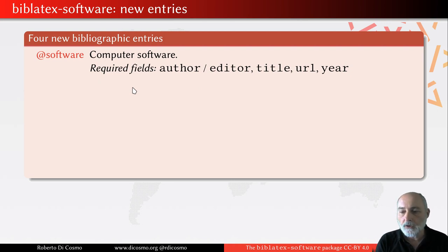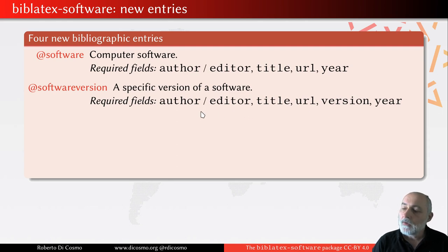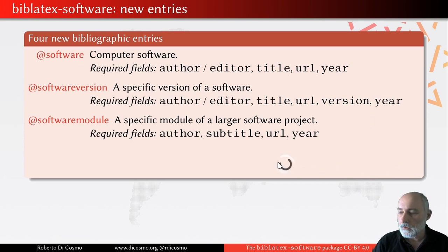This is the general concept of the project. But if you have a release — a particular version you want to mention — there is a second entry called SoftwareVersion, which is designed to describe a specific version of a software mentioned in a Software entry. Here you also need to add a version field to describe the version being mentioned. You also have a notion of a SoftwareModule — a module is a part of a larger software project which is sufficiently self-contained and identified that it deserves to be mentioned alone. A subtitle field comes into play to give the name of this particular module inside the larger project.